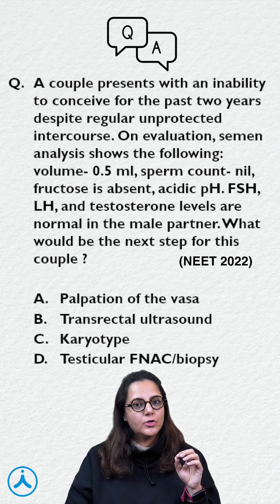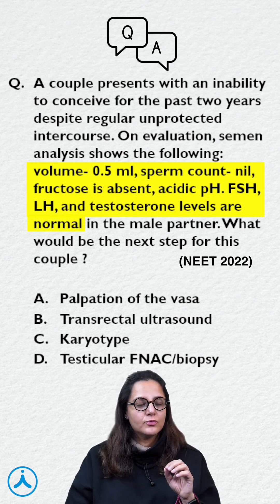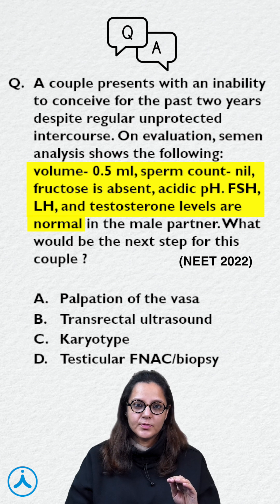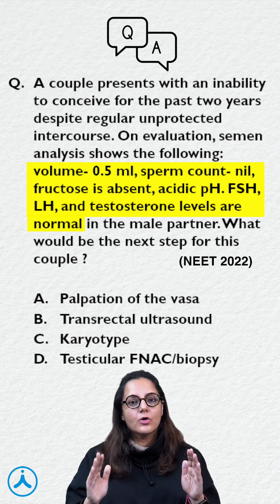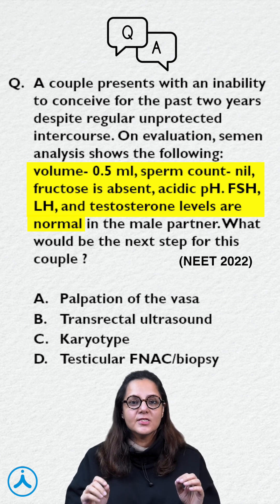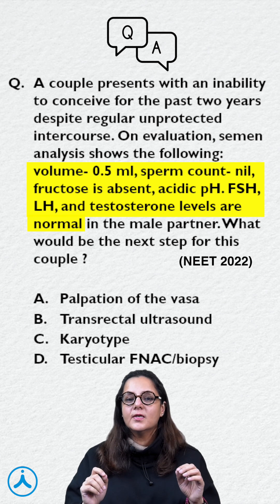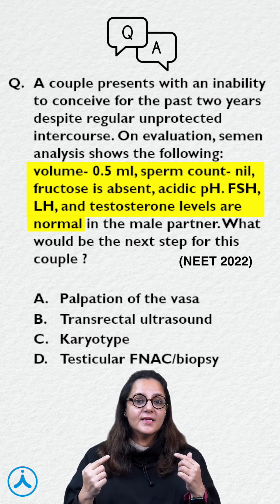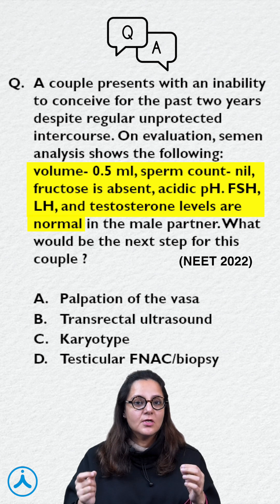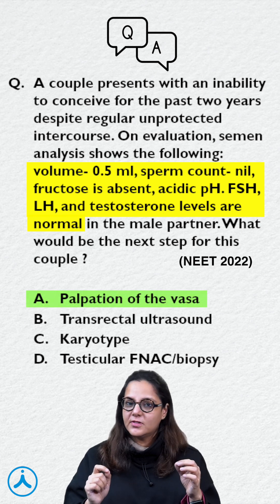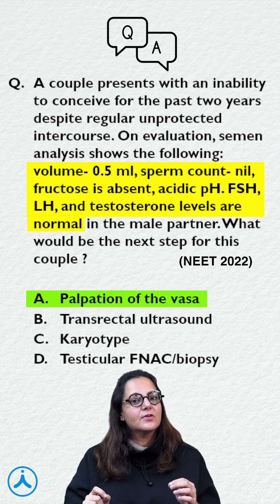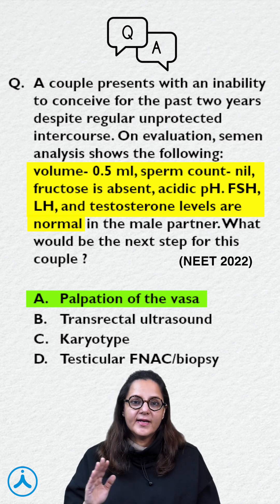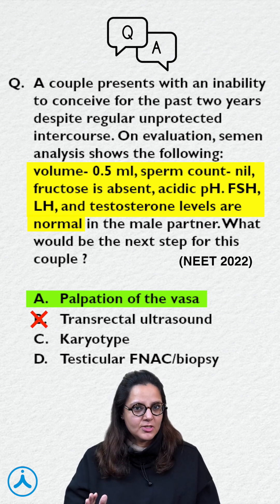Let's solve some questions. A patient presents with very low volume of semen, it is acidic, fructose levels are absent, there is no sperm, and all hormone levels are normal — a clear-cut case of post-testicular failure. What is the next best step? The next best step is always clinical examination, so we are going to palpate for the vas deferens. Transrectal ultrasound we will only do if we could not find anything on clinical examination.